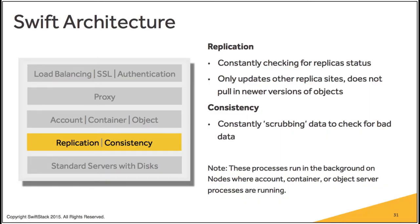Replication and consistency: it's constantly checking replica status, not on a read event - it runs in the background all the time, checking the state of every partition on every drive. If there's an inconsistency, replication kicks in and updates the copy that is either missing or different. If it replaces a copy that differs, the source data of that object is stored in a quarantine folder for administrator inspection later - so we don't overwrite or lose any data. The replicator asks: what is my checksum for this collection of objects? It checks collections, not individual objects.